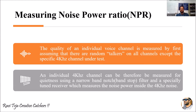This individual 4 kilohertz channel which is kept under test is measured for quietness using a narrow band notch or band stop filter. It is measured to determine whether any noise appears in that particular channel. Remaining all channels are already considered as random talkers — some signal or voice activity is happening — but the separately taken 4 kilohertz channel is specially monitored for quietness.